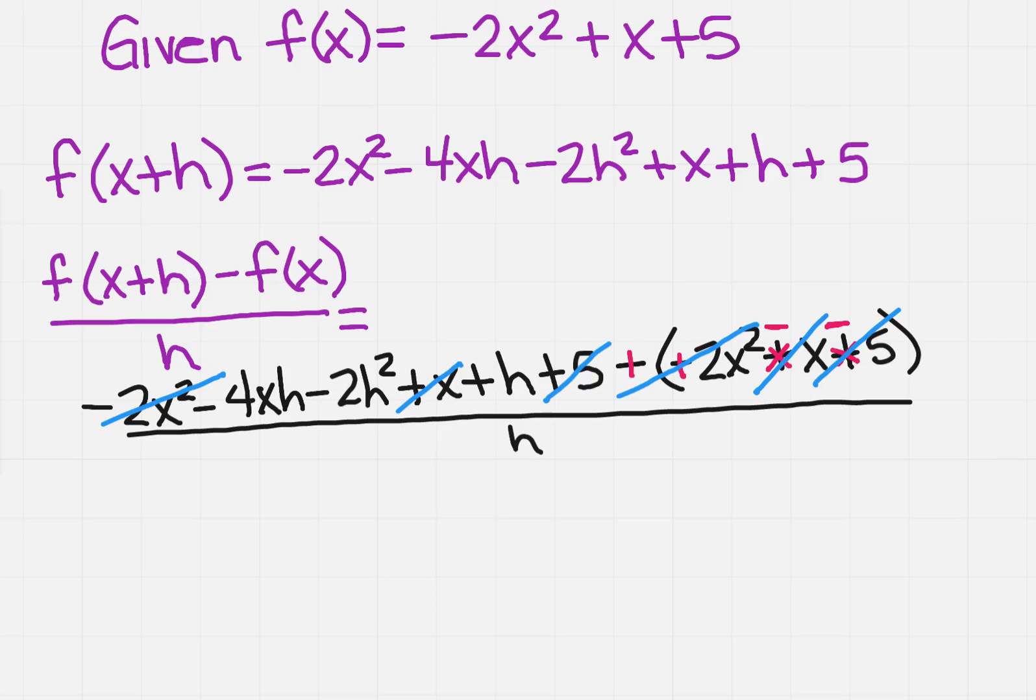So I want to write down everything that I did not cross out. So I have minus 4xh minus 2h squared plus h all over h.